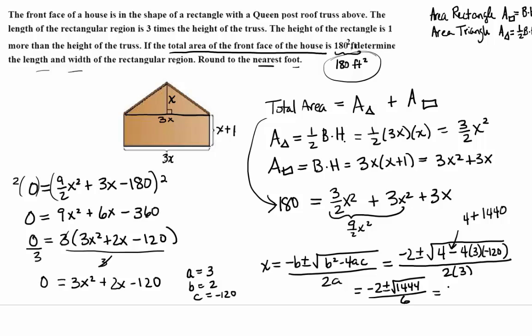So that's negative 2 plus or minus 38 over 6. We have two possible answers. Negative 2 minus 38 over 6, which is going to be a negative number, so that doesn't make sense. Or negative 2 plus 38 over 6, which makes sense because that's going to be positive. So I'm only going to use negative 2 plus 38 over 6, so that's going to be 36 over 6. So what is x equal to? 6.